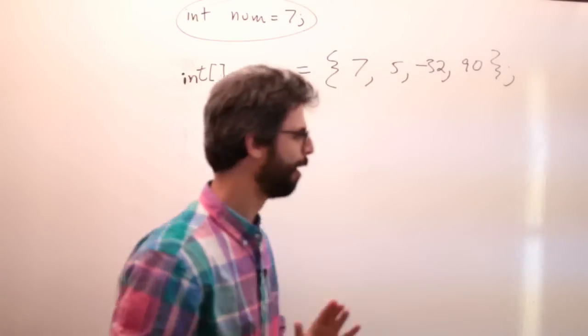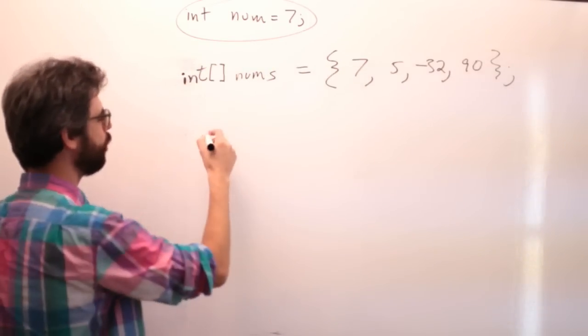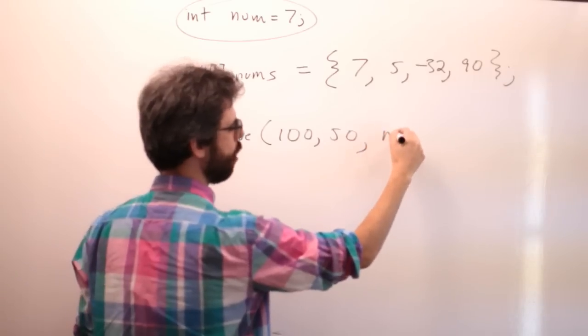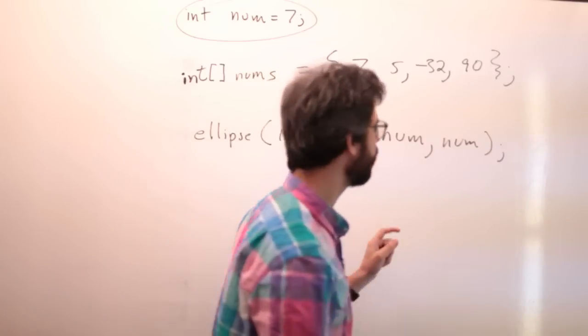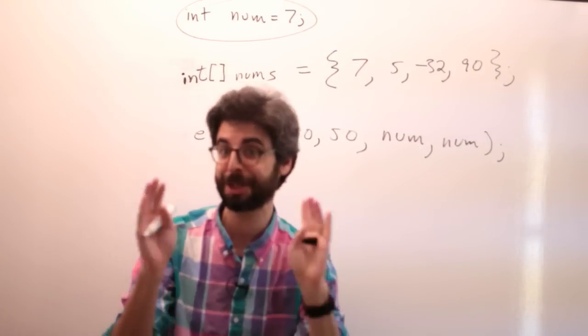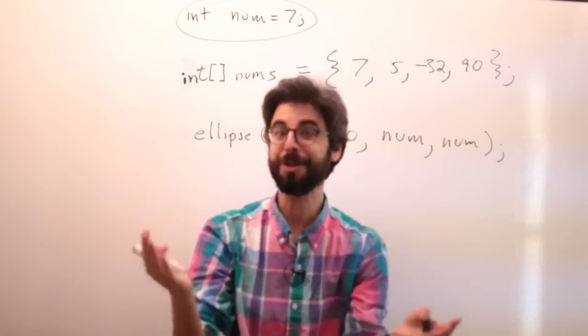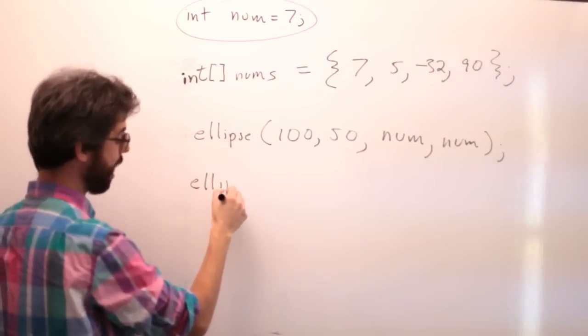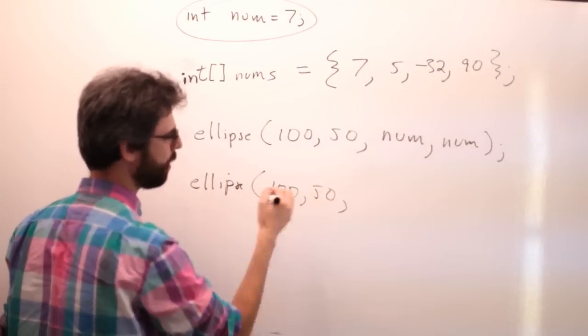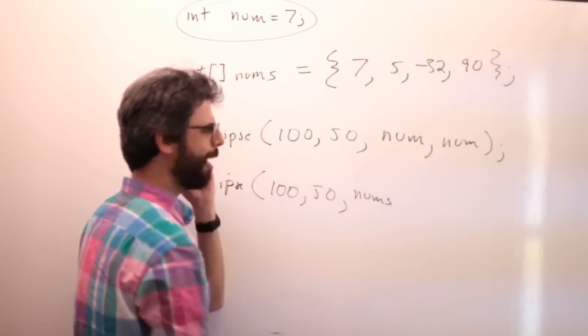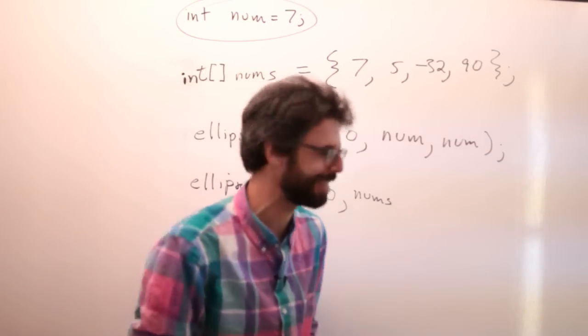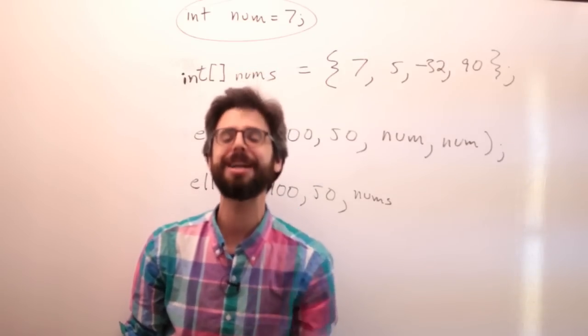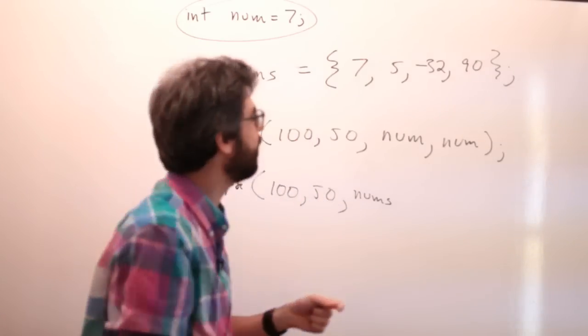Now comes the question. If I wanted to use the value num to draw an ellipse at 100 comma 50 with a size num, I just take that variable and put it in the arguments of the ellipse function. So what if I want to use this one or this one, some value from this list, from this array?